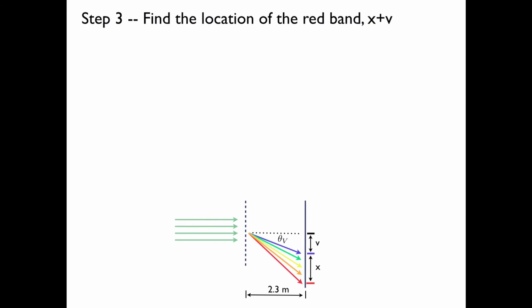Now we'll repeat the same thing for the red band, which is at a location X plus V. From the previous slide, we know that the angle for the red band is given by this relationship, where here lambda is the wavelength of the red light. This was stated to be 760 nanometers.